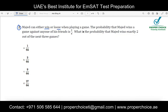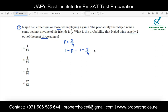Question number two: Majet can either win or lose when playing a game. The probability that Majet wins a game against any one of his friends is 3/4. What is the probability that Majet wins exactly two out of the next three games? This is a combination of independent and dependent events. The probability of winning is 3/4, so the probability of not winning is 1 minus 3/4, which equals 1/4.